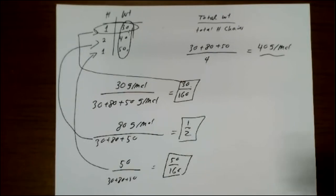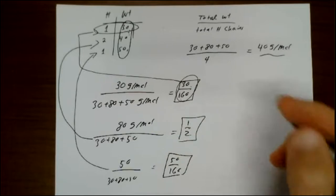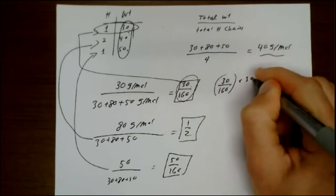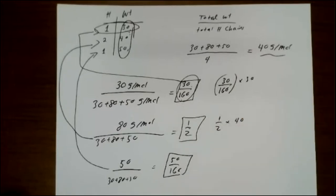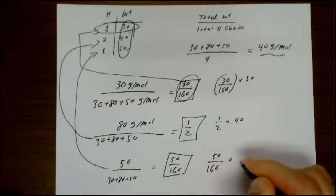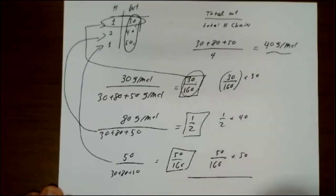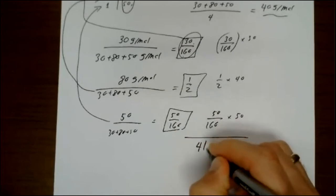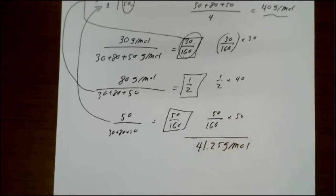Now I can calculate my molecular weight differently. I could say that 30 over 160 of my sample weighs 30. I could say half of my sample weighs 40. And I could say that 50 over 160 of my sample weighs 50. I can add them all up. When I do that, I get 41.25 grams per mole.